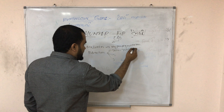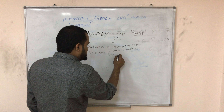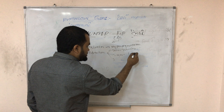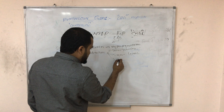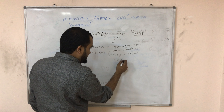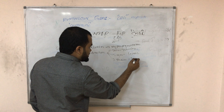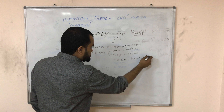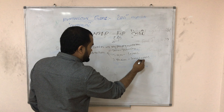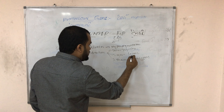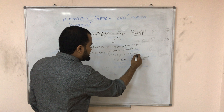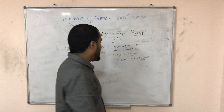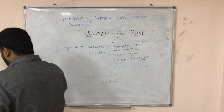Bilirubin deposition in the skin is called jaundice, in the eyes it is called icterus, and bilirubin deposition in the brain is called kernicterus.